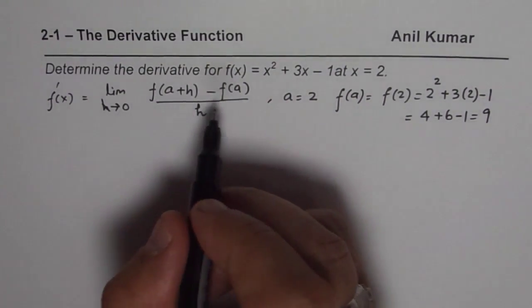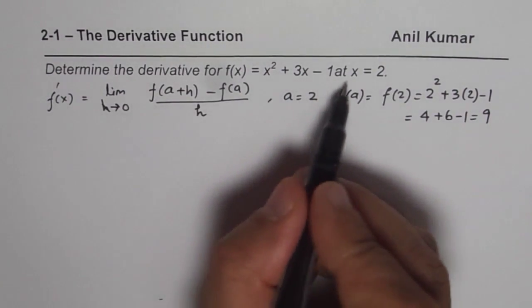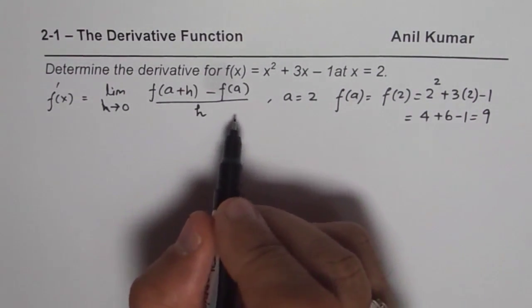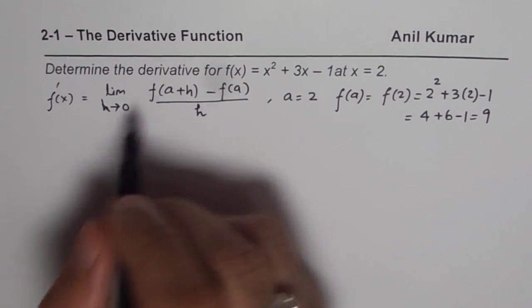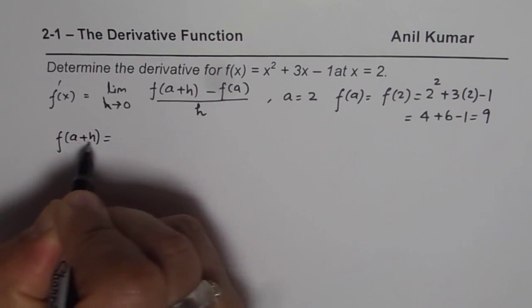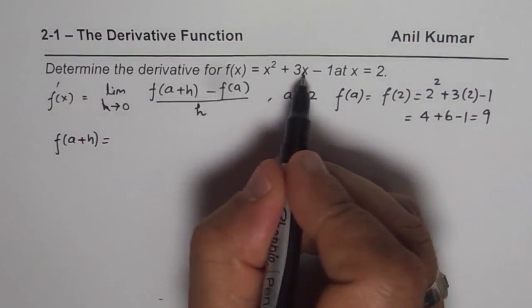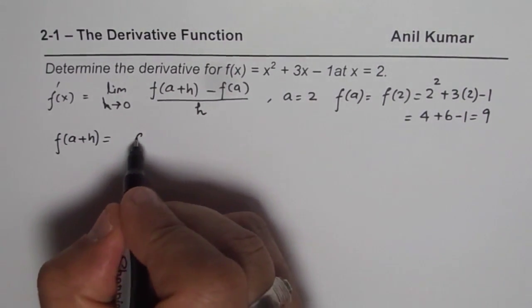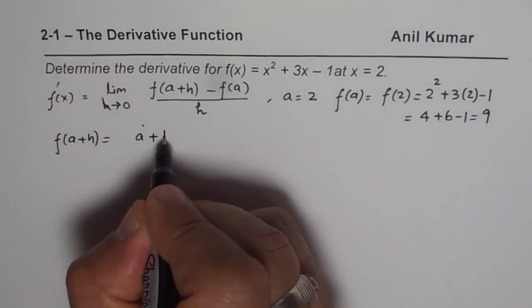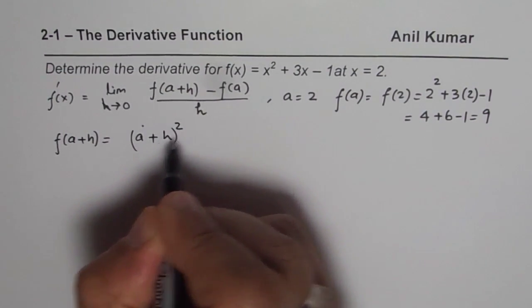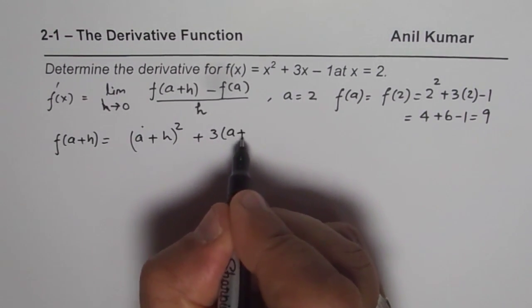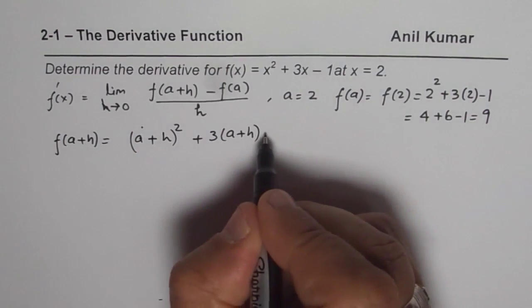So now we will substitute a plus h in this given expression and find the value of this limit. What we can also do is, we can separately calculate what is f of a plus h. So f of a plus h is, replace x with a plus h. So what we get here is, a plus h whole square, that is when I replace it here, plus 3 times a plus h minus 1.